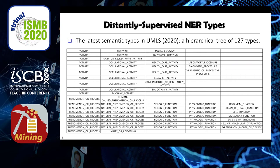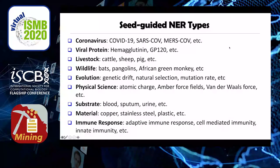There exists no human annotated training data for these types, so no existing fully supervised bio-NER models can detect these fine-grained new entities. We show examples of new entity types defined by human input seeds, such as coronavirus, viral proteins, livestock, wildlife, evolution, physical science, substrate, material, and immune response. These are also very important — for example, materials can be used to study the viability or how long the virus can stay on different material surfaces in the environment.